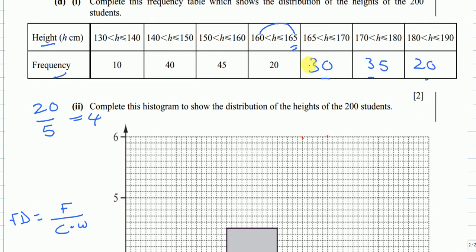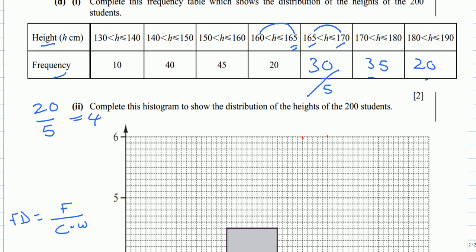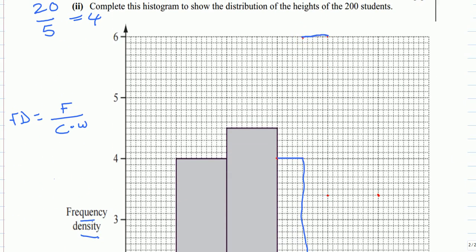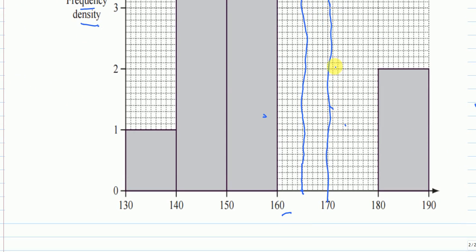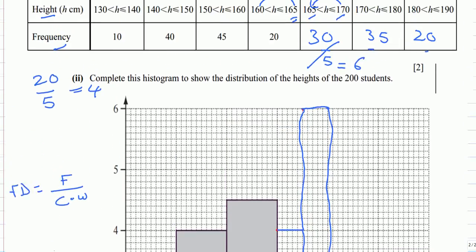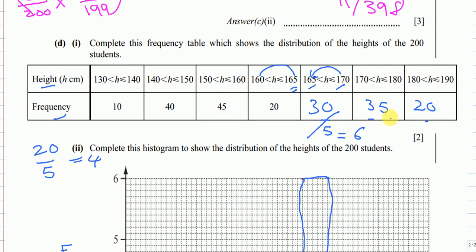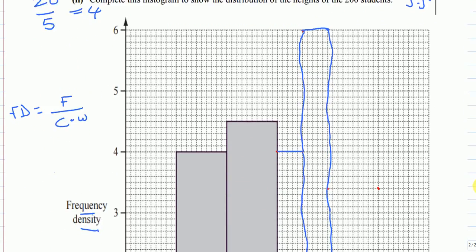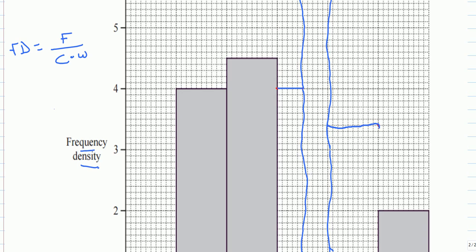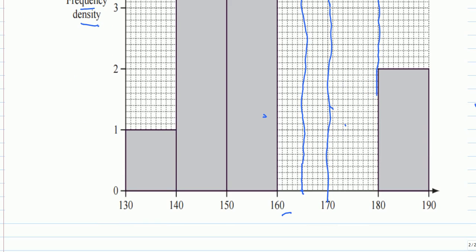For 165–170: frequency 30, class width 5, so 30 ÷ 5 = 6. Plot a bar at height 6 from 165 to 170. For 170–180: frequency 35, class width 10, so 35 ÷ 10 = 3.5. Plot a bar at height 3.5 from 170 to 180. Use a ruler in the exam. That's the full solution — thanks for watching.